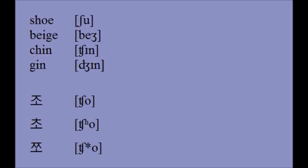Korean has three postalveolar africates: lenis, aspirated, and fortis, as in chou, chou, and chou.